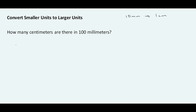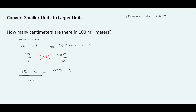Let's put that together. We have millimeter to centimeter — a 10 to 1 ratio. Using equal ratios, we have 100 millimeters to X. We create the fraction: 10 over 1 equals 100 over X. Cross-multiplying gives us 10 times X equals 100 times 1. Dividing both sides by 10, X equals 10. So 100 millimeters is equal to 10 centimeters.